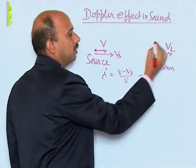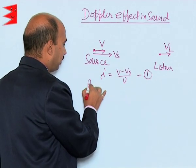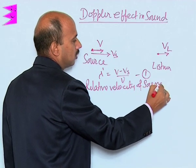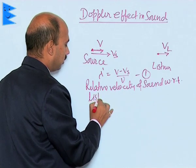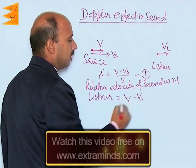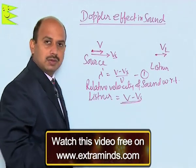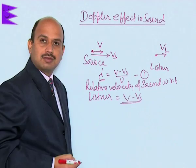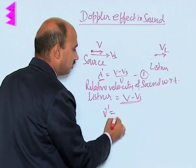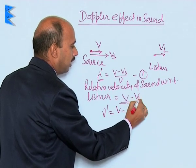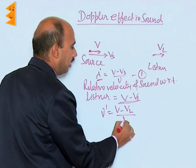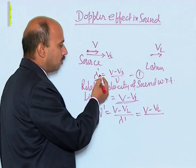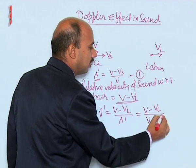Now suppose the listener is also moving towards the source with speed vl. The relative velocity of sound with respect to the listener is equal to v minus vl. This is the distance available in one second for the apparent wavelength λ'. So the frequency heard by this listener is ν' = (v − vl) / λ', and substituting the value of λ', we get ν' = (v − vl) / (v − vs) × ν.